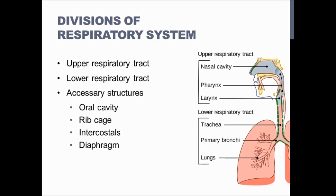The larynx is the cutoff point for the upper respiratory tract, and then it gets into the lower respiratory tract. In the lower respiratory tract, we have the trachea, the bronchi and the bronchioles — the whole bronchial tree itself. We'll talk more about all of that as we go along, and of course, the lungs.